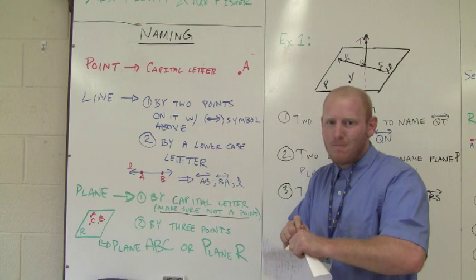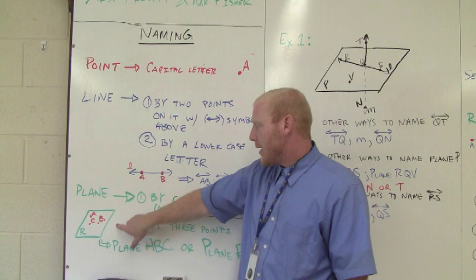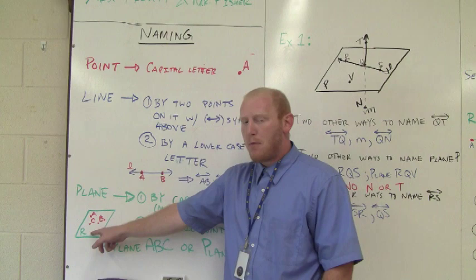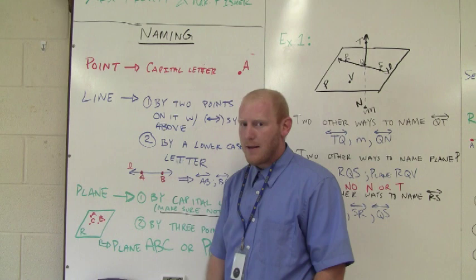Or we can name it by three points. So here I have a plane. Either I can name this one plane ABC or plane R. Once again, R is not a point because there's nothing here. There's not a point. So this is plane R or plane ABC.